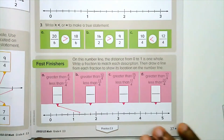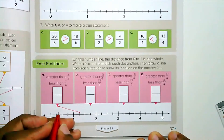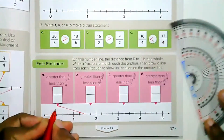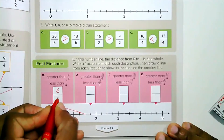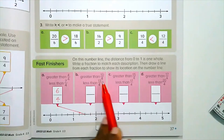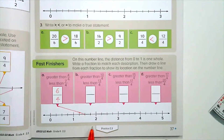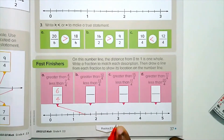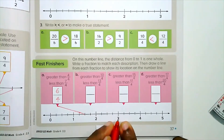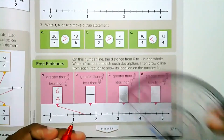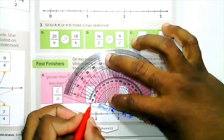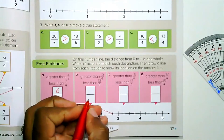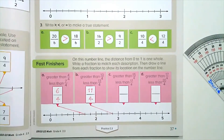Part b: greater than ten-fourths but less than thirteen-fourths. This is ten here — so that will be eleven-fourths or twelve-fourths; for example, eleven-fourths.